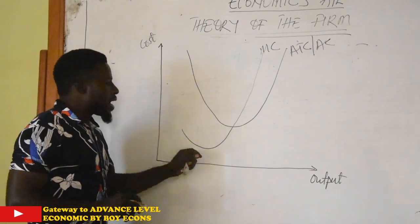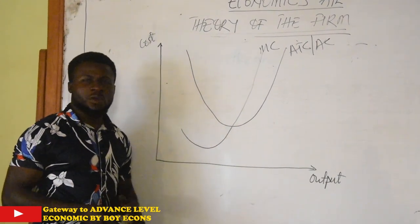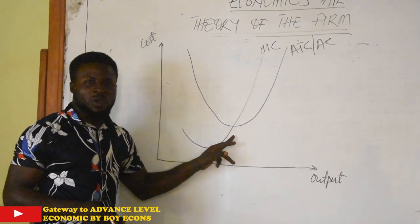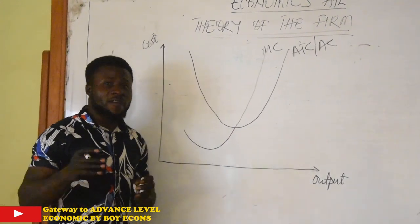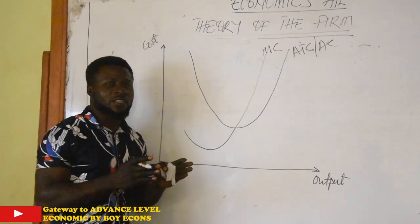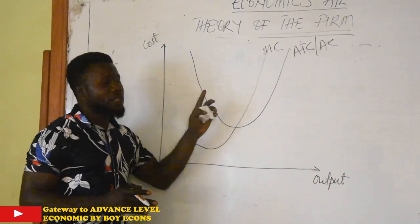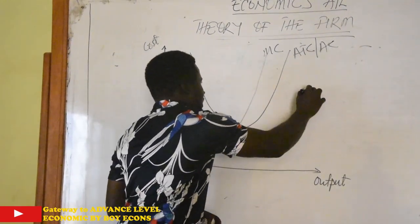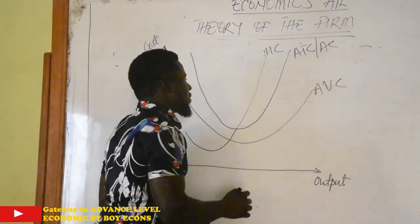And then your average variable cost curve must always occur below or appear below the average total cost curve. Why? Because it is a combination of average variable cost and average fixed cost that make up the average total cost. So it will always appear below it.